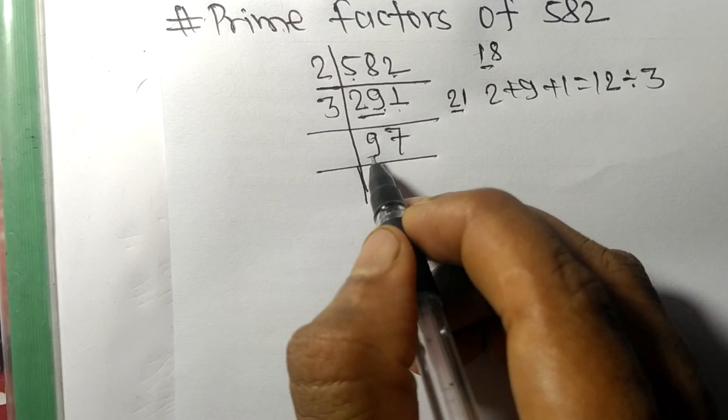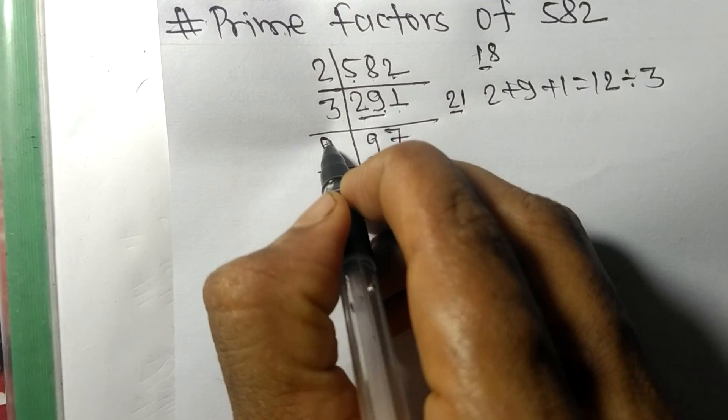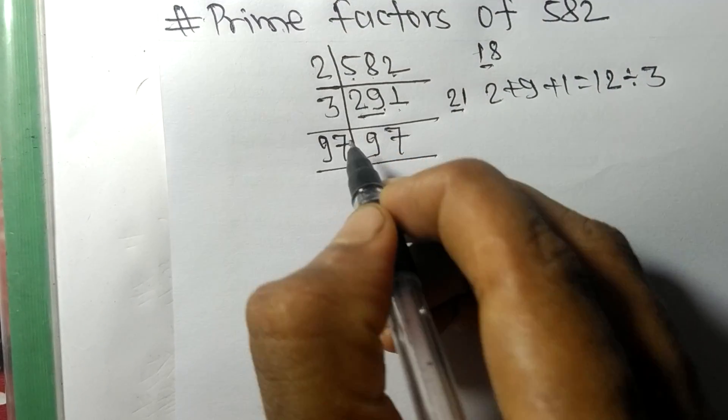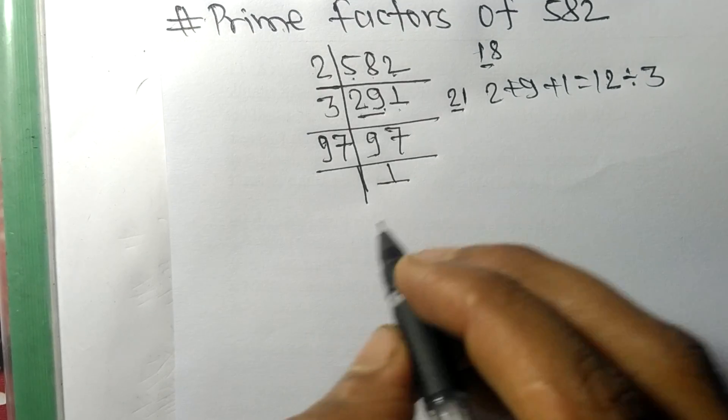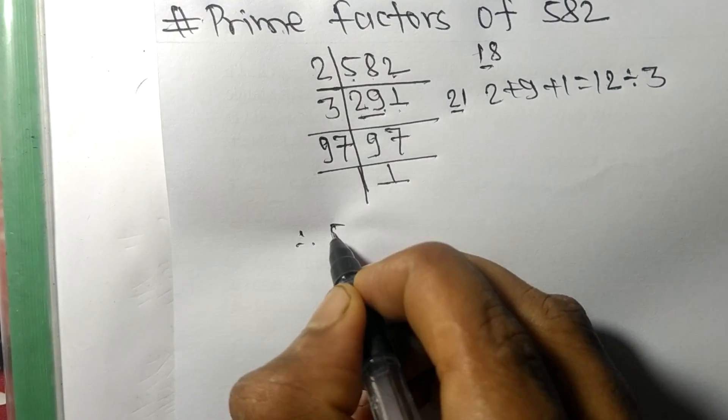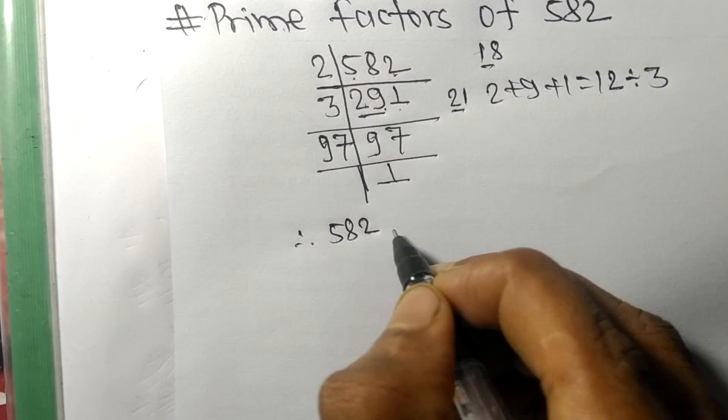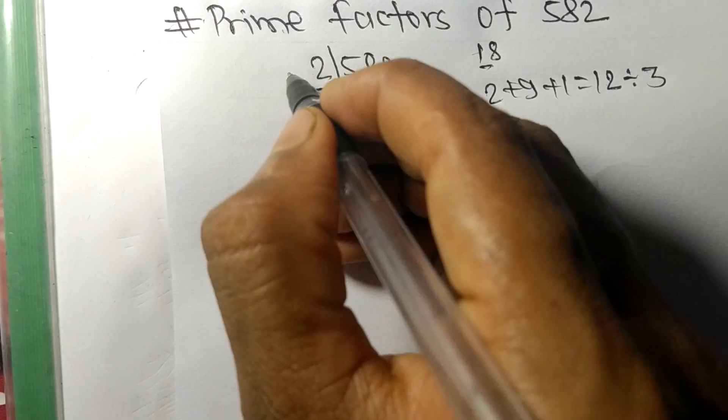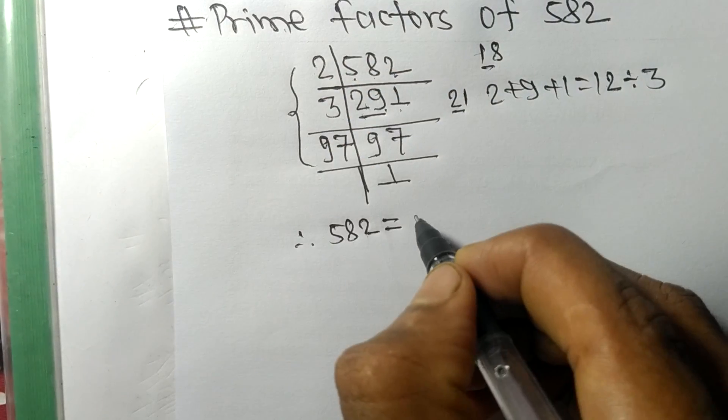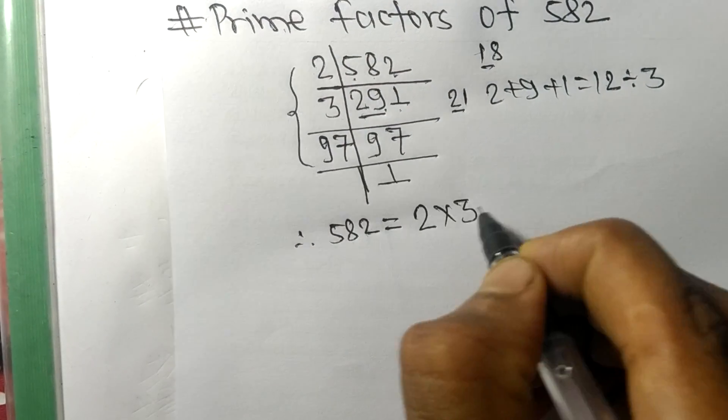So it is divisible by 97 itself and we get here 1. Therefore 582 is equal to, from this side it is 2 times 3 times 97.